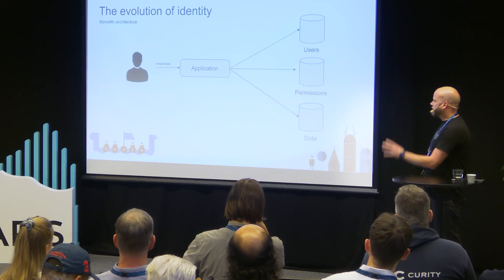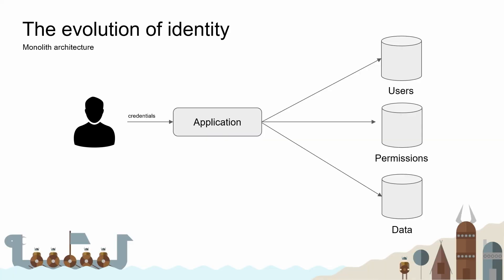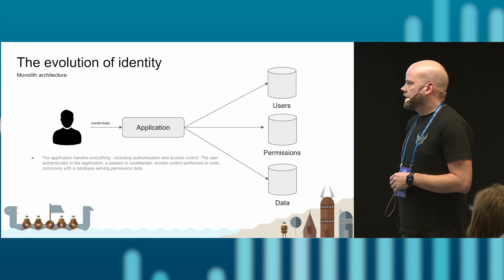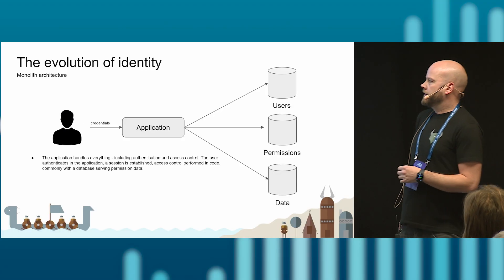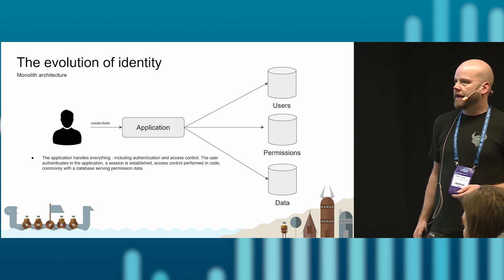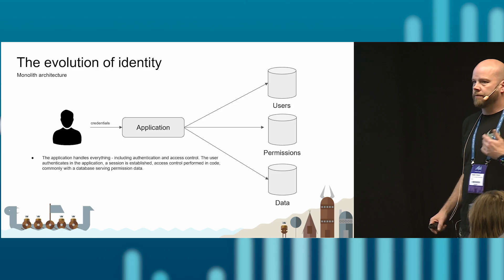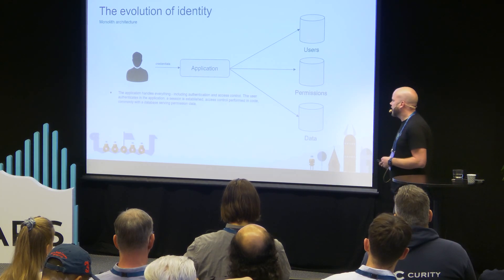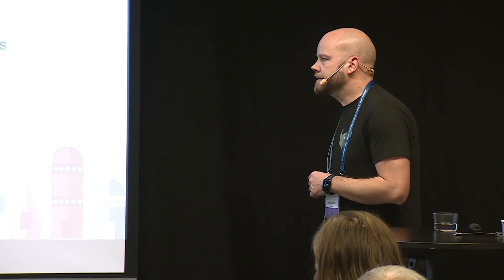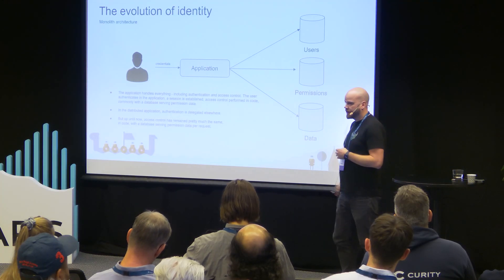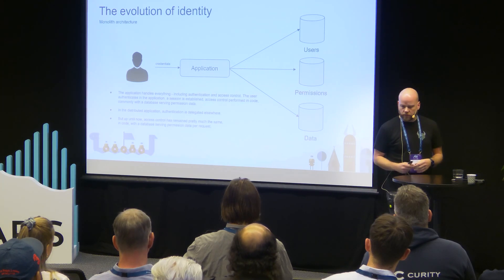We're all familiar with the architecture of the monolith — basically the application does everything. The application does authentication, it does access control, it has to verify the identity of the user, verify that the action the user is trying to do is allowed, then fetches the data and returns it to the user. All of authentication and access control are done in one single place.